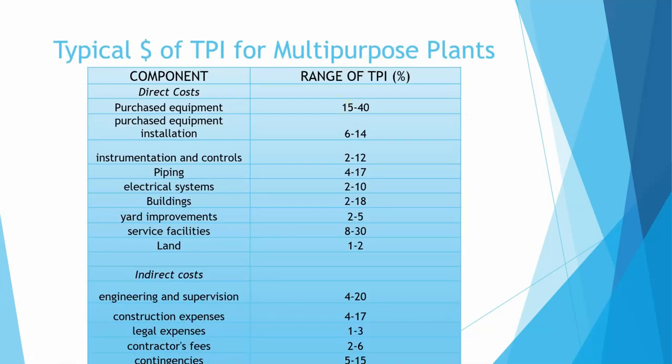This is a typical range of the total permanent investment. I just want to show you what percent of the investment has to go into each one of these things. The vast majority of it will have to do with the equipment you have to purchase for your process. If your process is unique and has to use specific pieces of equipment, very niche equipment, it's going to be towards the 40% end. If it's a pretty routine type thing, it's going to be on the lower end, towards 15%.